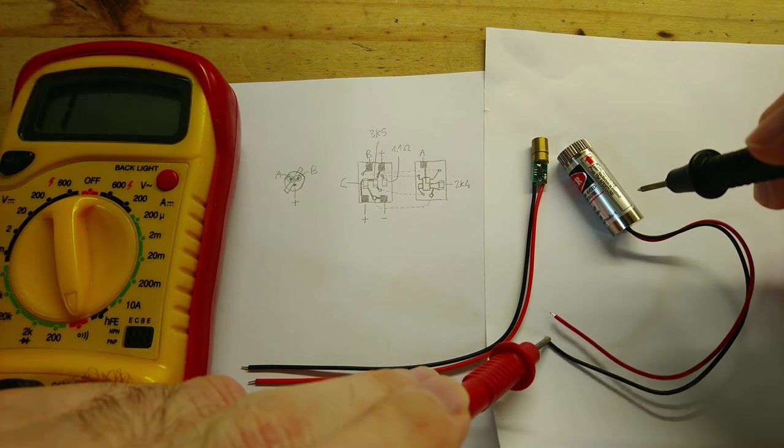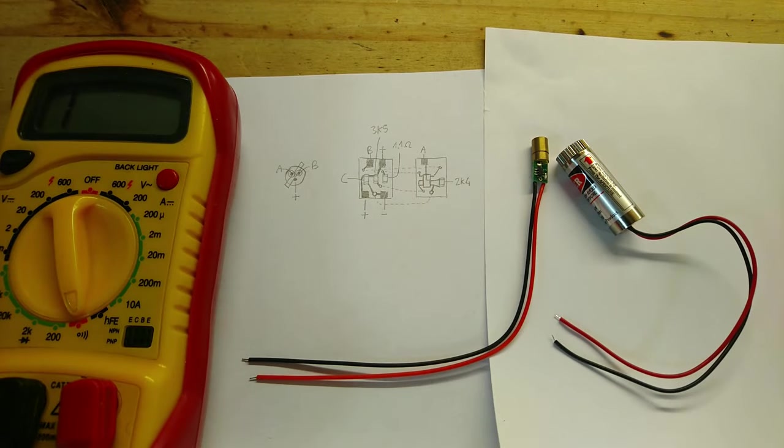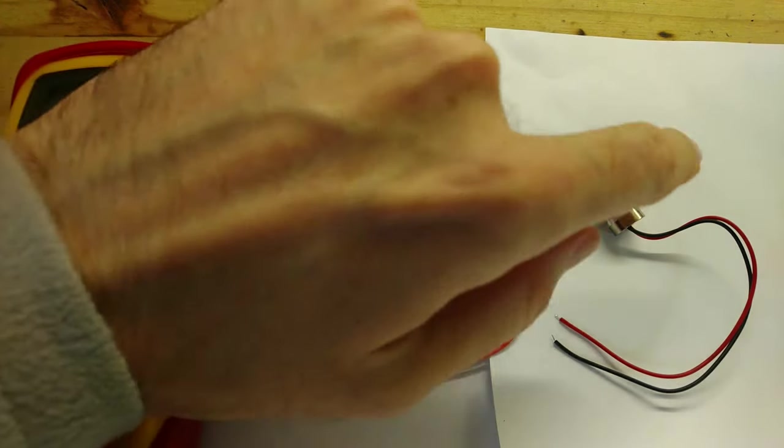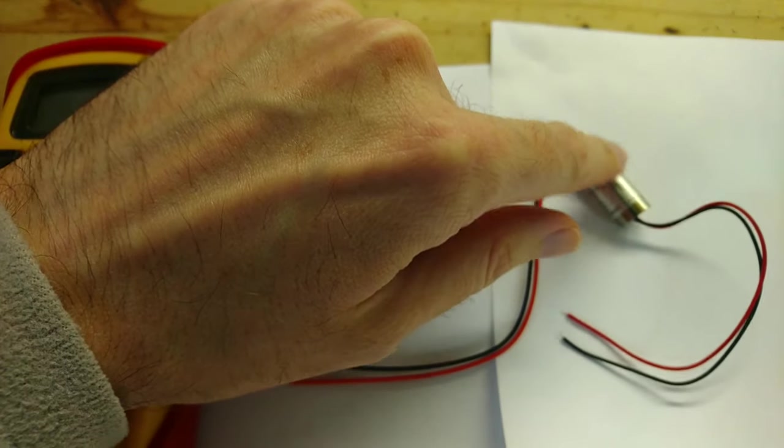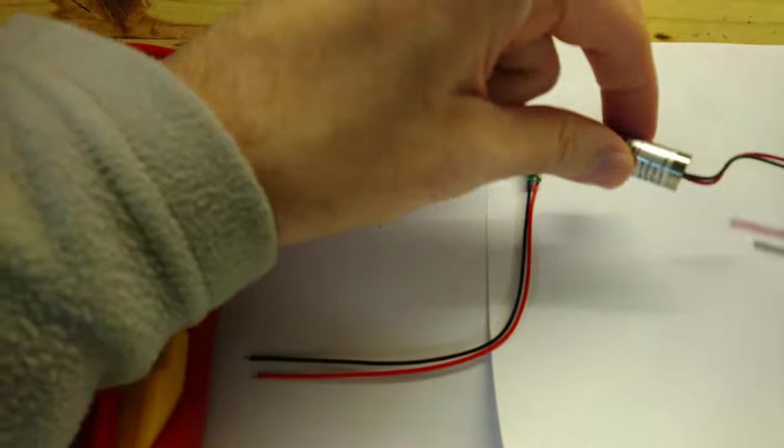This is true also for the bigger ones, so this one is shorted to the positive. So this is something that is surprising, and you will have to keep in mind when using this kind of lasers, because if you mount them on a mechanical chassis or something that is connected to the negative, you're causing a short.